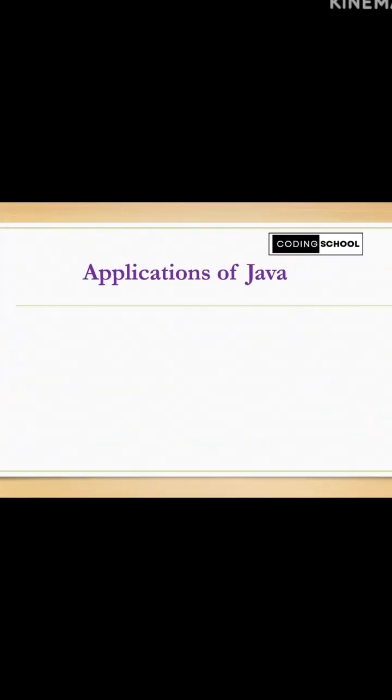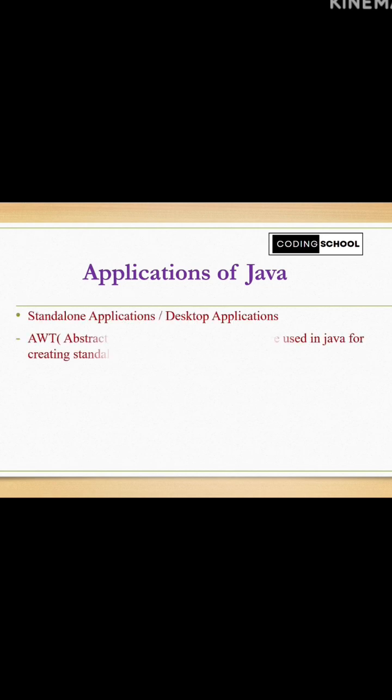Applications of Java — Java is used for various applications, but these are some common ones. The first application is standalone application, or desktop applications. To create desktop applications using Java, AWT (Abstract Window Toolkit) and Swing are used.